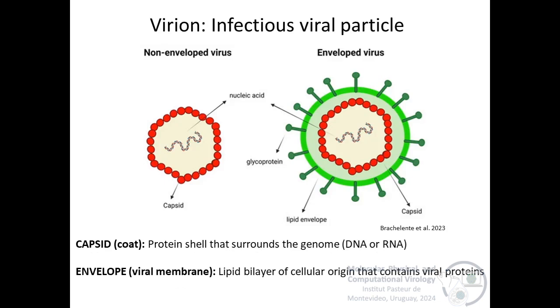We call virion to the infectious viral particle. Viruses are usually non-enveloped or enveloped. In the case of non-enveloped viruses, a protein coat called the capsid surrounds the genome. The genome can be DNA or RNA, and there are seven different types of viral genomes. The capsid, on the other hand, can be helical or icosahedral, or even complex.